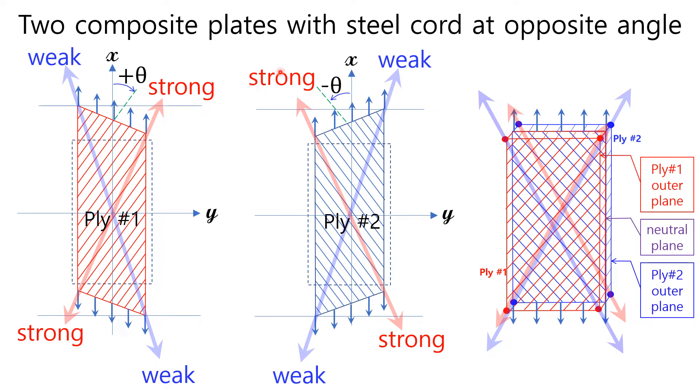Let's look into the deformation for two composite plates with steel cord at opposite angle. Diagonal lines show weak and strong stiffness directions. The diagonal having the smaller angle with steel cord is strong diagonal because the stiffness along that diagonal will be higher compared with that of the other diagonal having the bigger angle like this.